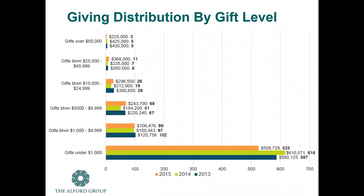This example from Alford Analytics, which we conduct as part of development assessments, helps us in building a gift table because we know what the last three years has looked like. There were three gifts at the fifty thousand and above level in 2015, totaling two hundred and twenty-five thousand, compared to the previous two years where they brought in a little more from five donors in each year. So they need to look at who they lost and determine the feasibility of whether those people can be recovered at that level, and whether individuals or foundations or corporations at the level below might be upgraded. In other words, you build your plan based on actual data.